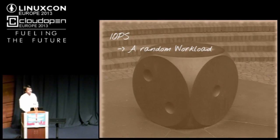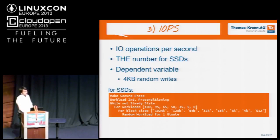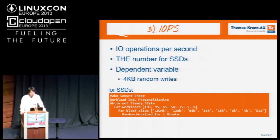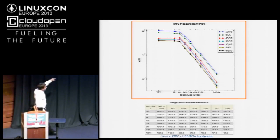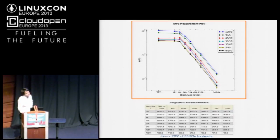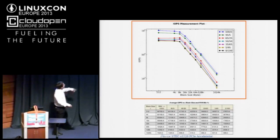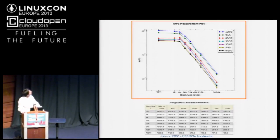The first test we do is the IOPS test. IOPS is the number people most want to know for SSDs. You can see the different block sizes we're testing — starting with 512 bytes and going up to 1 megabyte. This graph is interesting: you can see the different IOPS here. We get the most with the smallest block size — nearly 100,000 IOPS. Actually, this is not an SSD but a PCI Express accelerator card from ASTEC. You can see IOPS drop as block sizes increase.